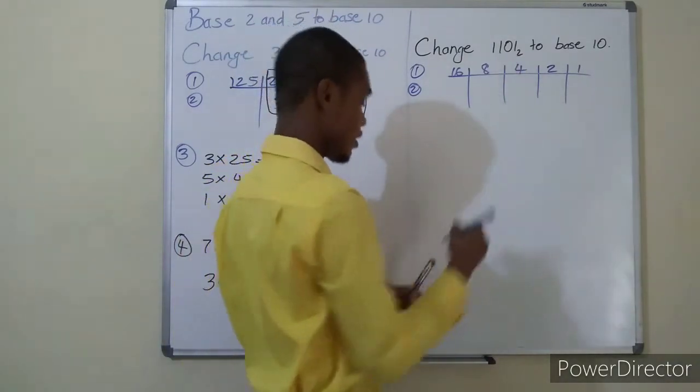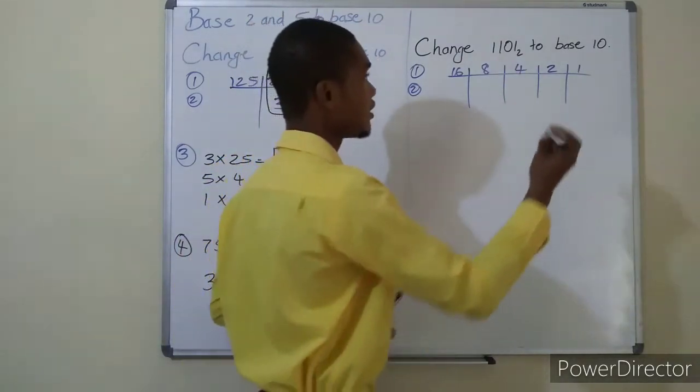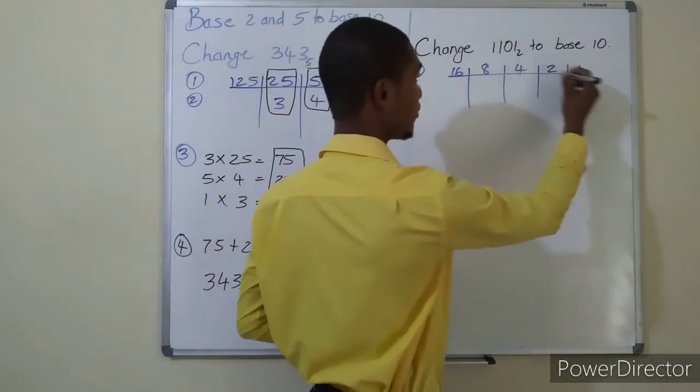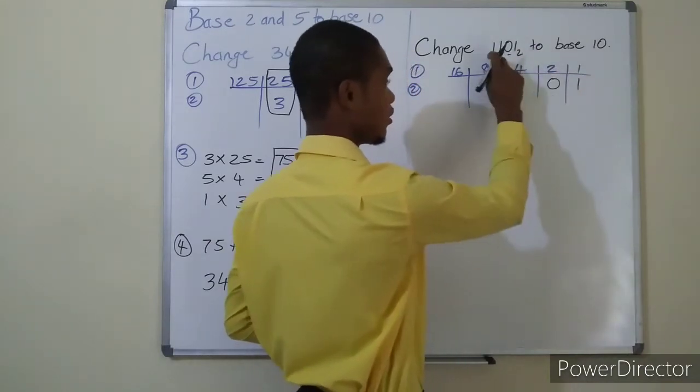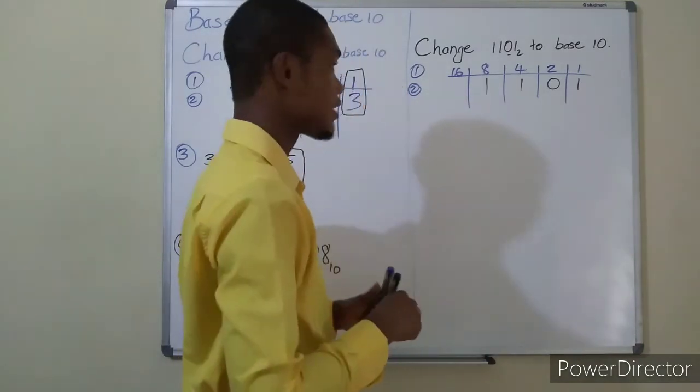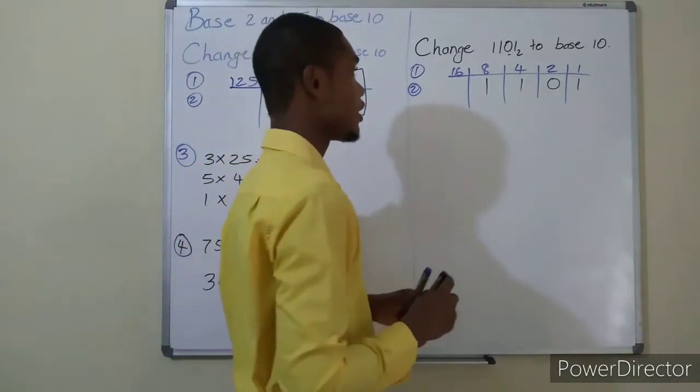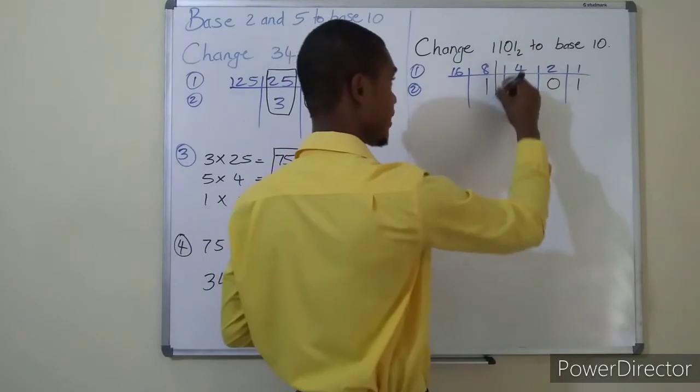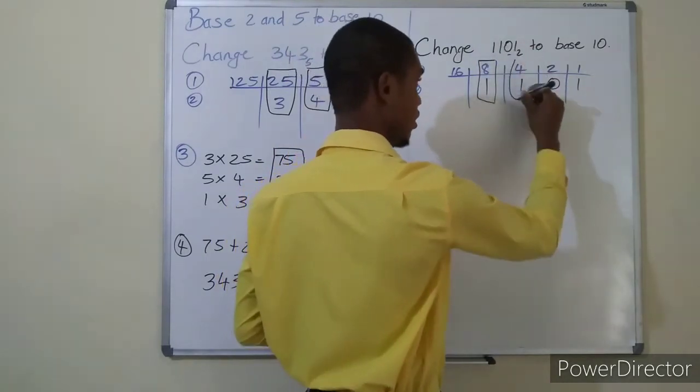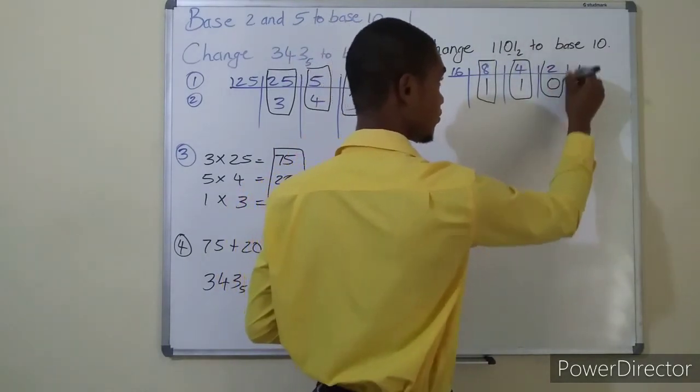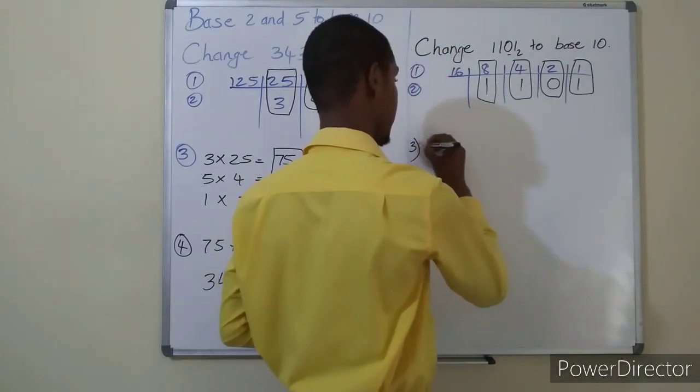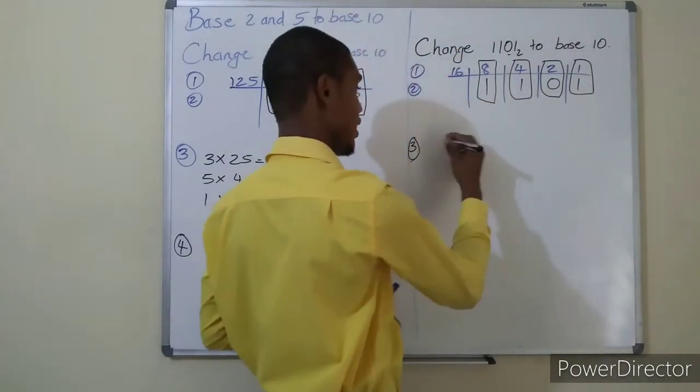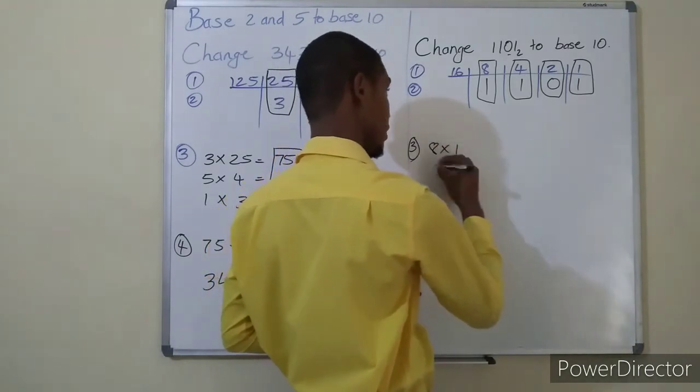Step two now, putting the digits in on your table. So one goes here, zero is next, you put a zero there, one is here, another one here. So that takes care of step two. Now you're dealing with step three, which is to multiply what's in the columns.